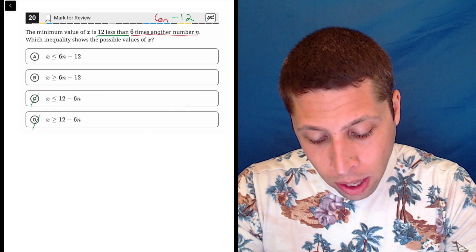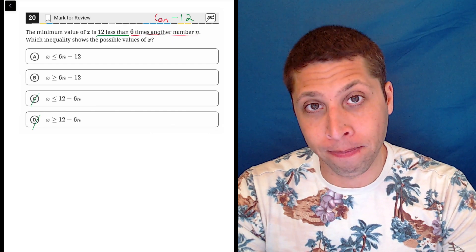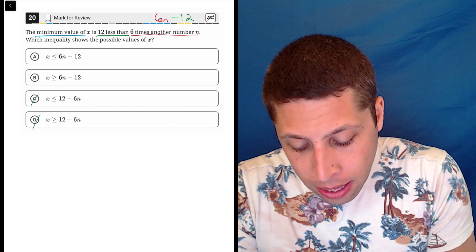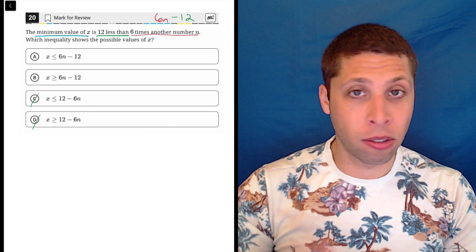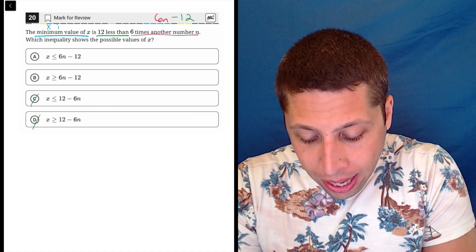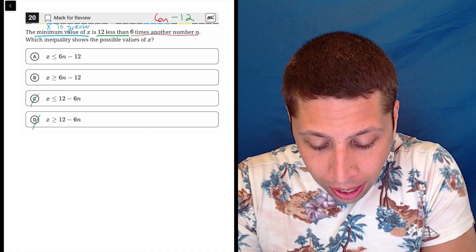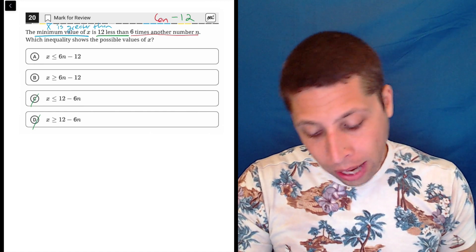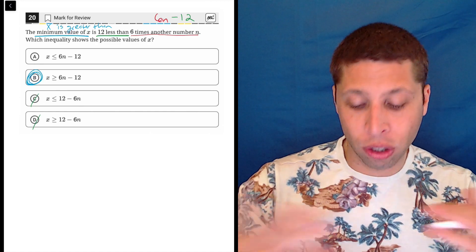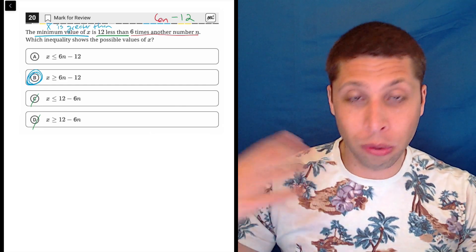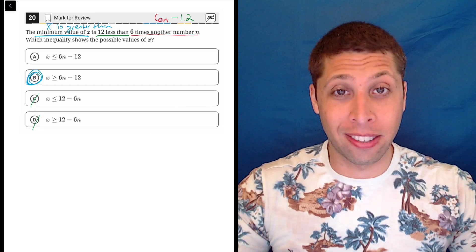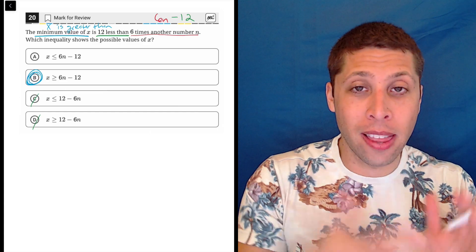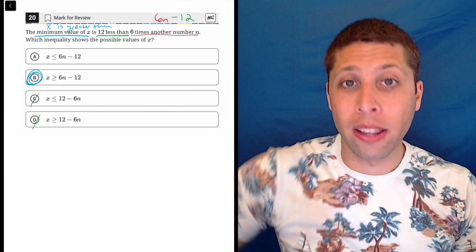The next part then is, which direction is this inequality symbol going to go? So the minimum value of x, meaning just rephrase that, x is greater than 6n minus 12. So x is greater than 6n minus 12 is choice B. That's just flipping it from minimum to something more inequality sounding. If it's the minimum, then x is going to be bigger, greater than it.